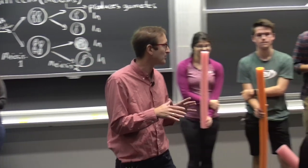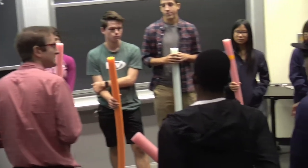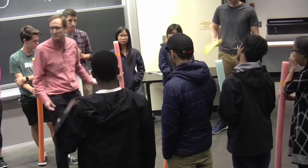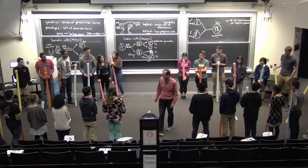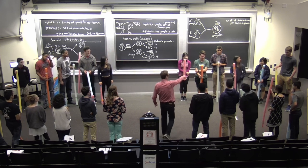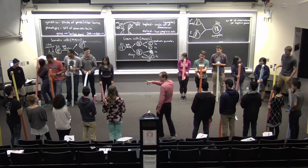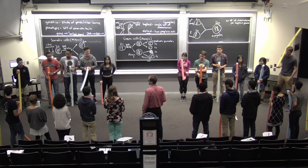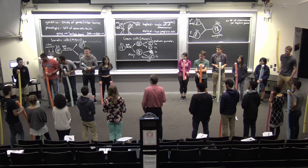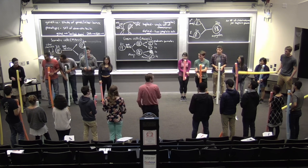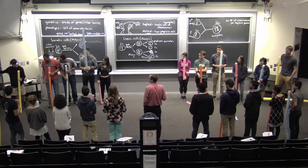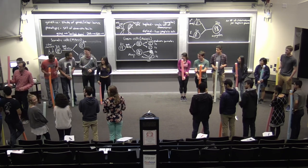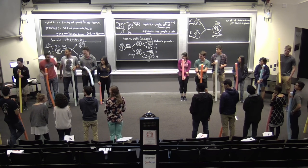Let's think about probability. What was the probability that a gamete would end up with this orange allele on the red chromosome? Half, right? Because there are two — these two gametes have that allele, and these two should not. We just had a chromosome loss event, so that gamete is in trouble.